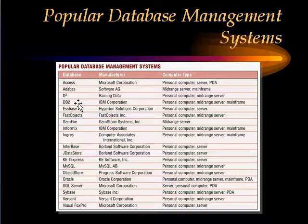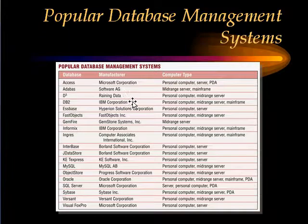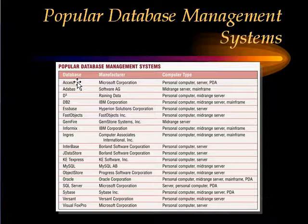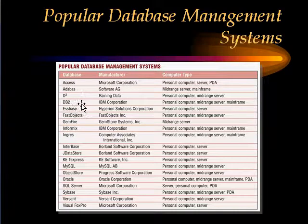Another important database management system is DB2. It was produced by IBM and is used on personal computers as well as on major mid-range servers and mainframe computers. In other words, Access is used mostly on personal computers and low-powered computers, whereas enterprise-level database application systems are designed and managed using DBMSs such as DB2 and Oracle.